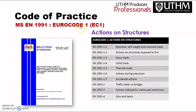Euro code 1 covers actions on structures — it explains density, self-weight, and imposed load. Number two is actions on structures exposed to fire. Number three is snow loads, four is wind loads, five is thermal loads, six is actions during execution, and seven is accidental actions. There is also traffic load on bridges, actions induced by cranes and machinery, and actions on silos and tanks.